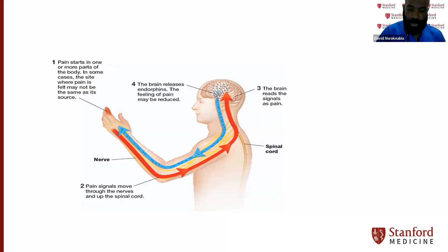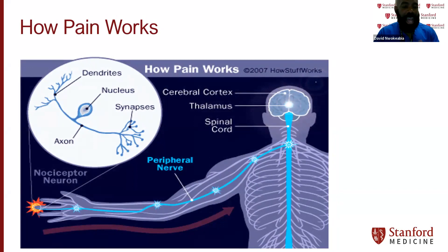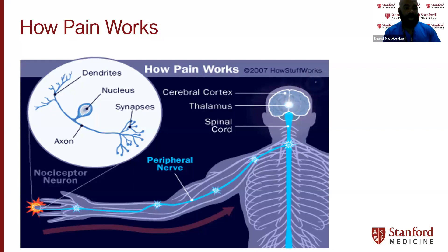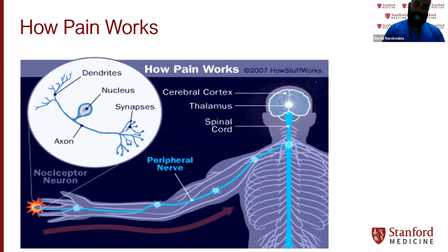To go further, we have to talk about nociception. Nociception is basically your body's reaction to pain — how it's perceived and transmitted. The pain in the finger is carried by very small nerve fibers called dendrites. It is transmitted into a nucleus, crosses synapses, goes through the spinal cord, and is transmitted all the way to the cerebral cortex — the center where everything happens. From there, an interpretation is sent back to the hands, causing two things: you pull your hands away from the painful stimulus, and the body releases endorphins to help reduce the pain.